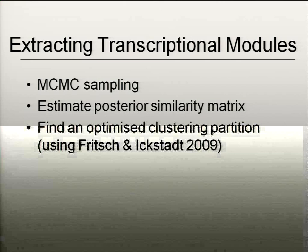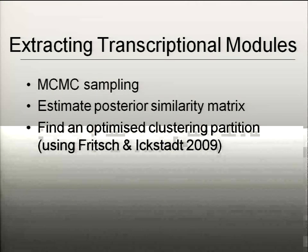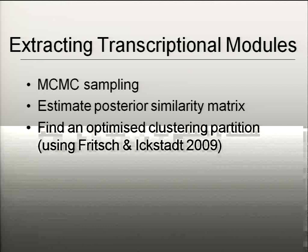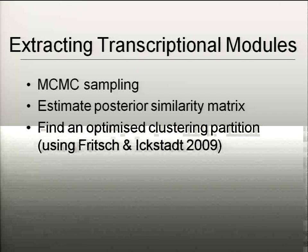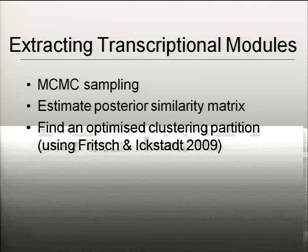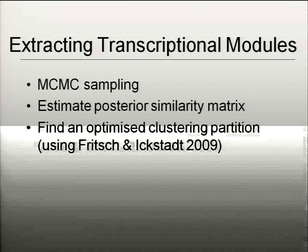Having done all of that, you can then find some kind of summary clustering partition. It's a bit of a shame having done all this sampling to then collapse it to one average clustering partition, but it's a convenient way of handling it. A recent paper gives a nice theoretical result that allows you to extract optimised clustering partitions from a similarity matrix. We run through that procedure, and that gives us some results.